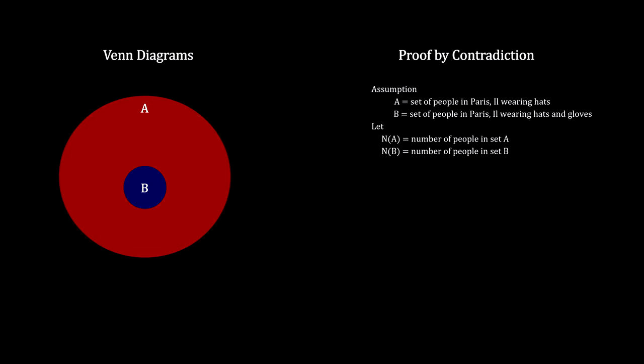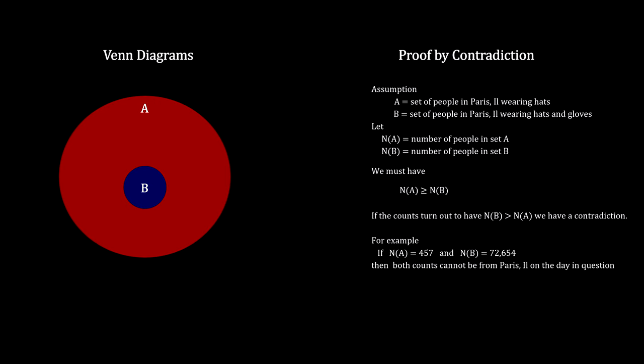Now we count the number of people with hats, and we count the number of people with hats and gloves. If the number of people with hats and gloves is greater than the number of people with hats, you have a contradiction, a violation of the basic assumption. The assumption that they are counting people in the same town on the same day must be false. For example, this violation could happen if the count for hats was indeed taken in Paris, Illinois, but the count for hats and gloves was taken in Paris, France.